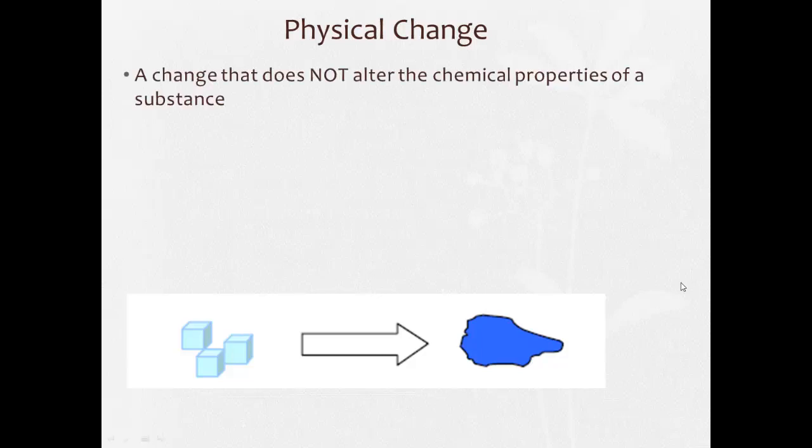Now, physical changes are changes that do not alter the chemical properties of a substance. So they're usually like a change in size or shape. It could also be a change in phase. Right here we have ice, solid water, becoming liquid water. And the size and shape, they kind of change along with that.